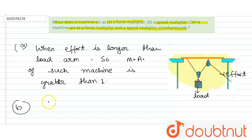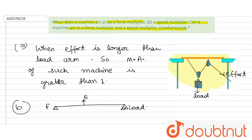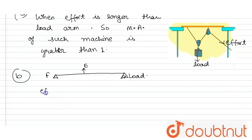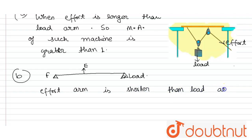For the speed multiplier, the Class 3 lever works as a speed multiplier. In the diagram, this is the fulcrum, this is the effort E, and we apply the load. Here, if the force arm is shorter than the load arm, the mechanical advantage of such a machine is less than one.